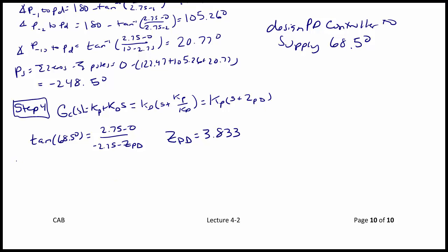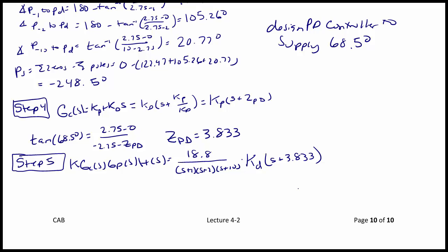Step 5: we're going to use the magnitude criterion to find Kp. First, let's write the compensated open loop gain. We have K·Gc(S)·Gp(S)·H(S) = 18.8 / [(S+1)(S+2)(S+10)] · Kd·(S+3.833).